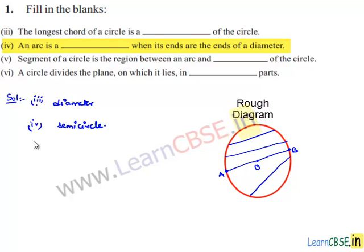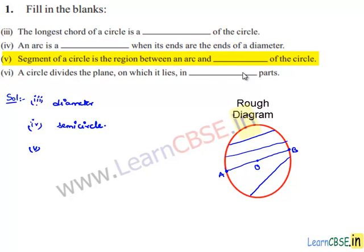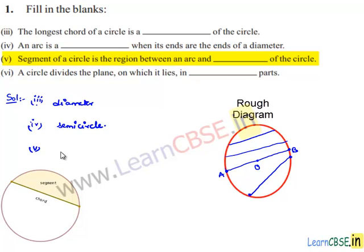Moving on to the fifth bit: a segment of the circle is a region between an arc and the chord of the circle, by definition.